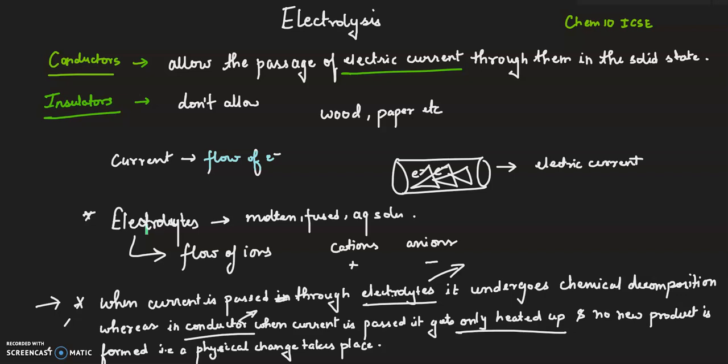The electrolytes allow the passage of electric current through them in molten, fused or aqueous solution form. In electrolytes, the current passes by the flow of ions. We have two types of ions: cations and anions. Cations are positively charged while anions are negatively charged.